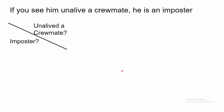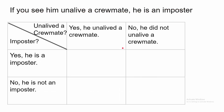What is an implication? This is an example of an implication: if you see him on the live crewmate, he is an imposter. So this is an implication — if A, then B. If you see him on the live crewmate, he is an imposter. So let's make a truth table to demonstrate what this implication means.